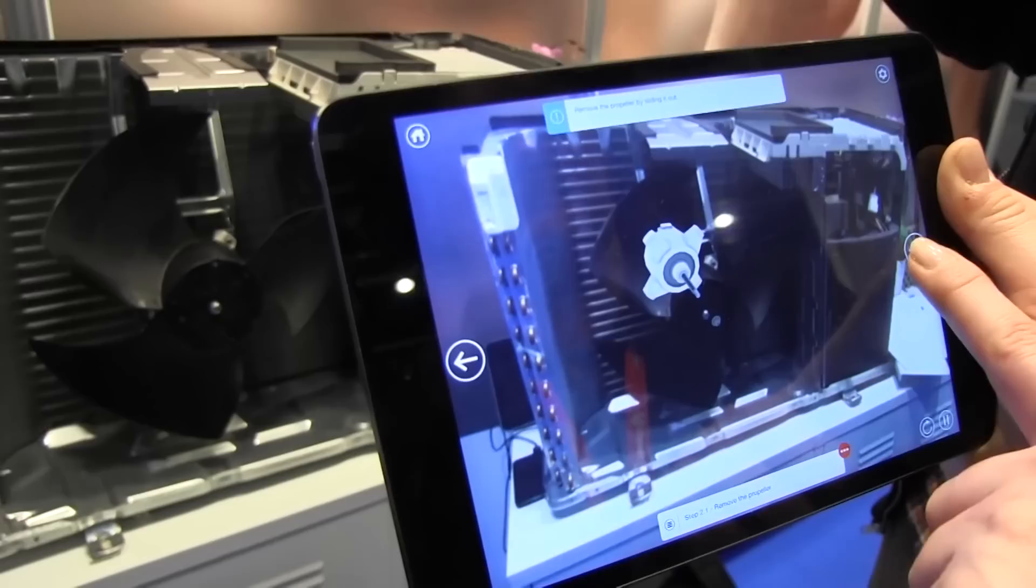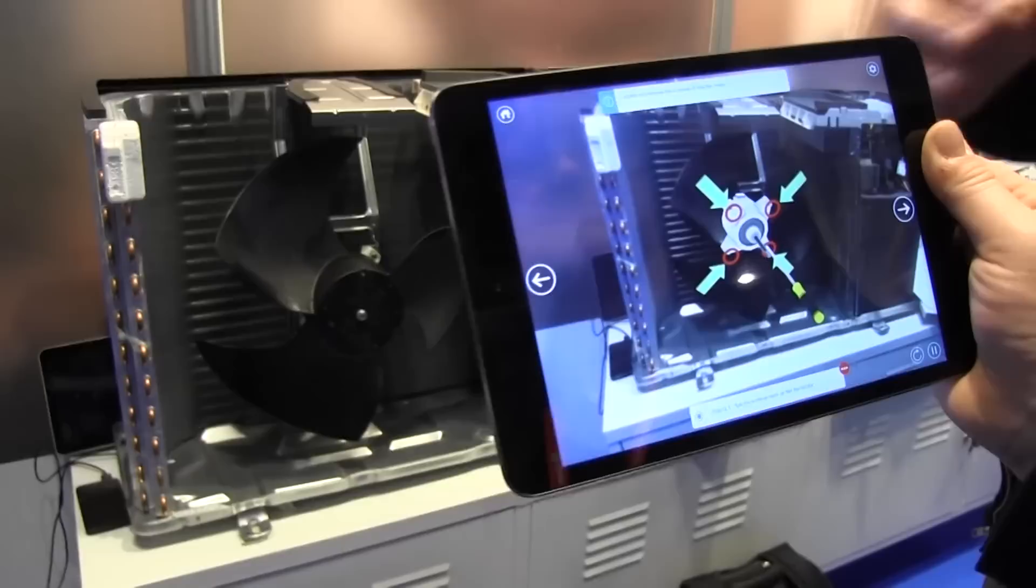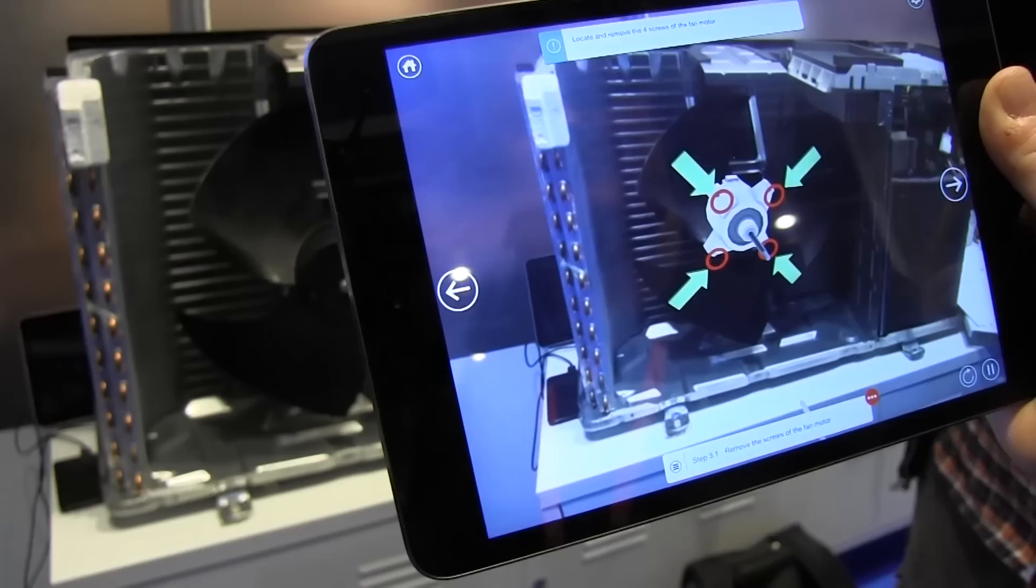I have all the different components. I'm getting different augmented reality layers for each and every component. This would help an engineer if he has a problem with an air conditioner or a car or whatever, to help fix it and to connect to a knowledge database immediately.